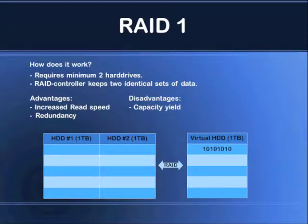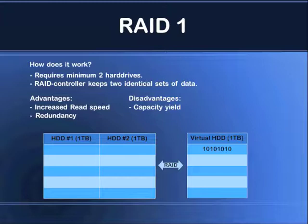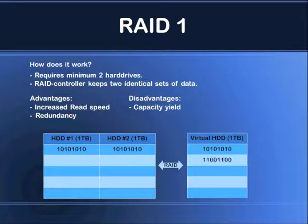When the operating system is writing data to the drive, the RAID controller will simply take the data — represented by these eight bits — and it will write them to both the hard drives. So hard drive one and two will be identical. That's why it's called a mirrored RAID array. You see here, it just takes data and puts them on both drives.